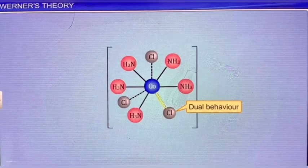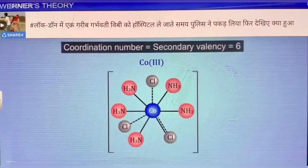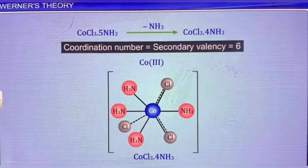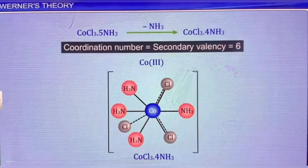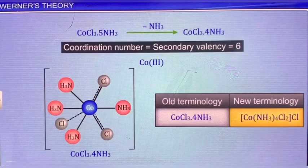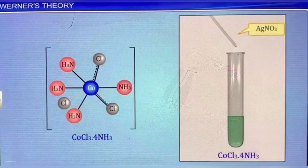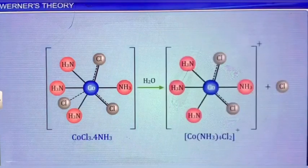Similarly, in CoCl₃·4NH₃, to satisfy the secondary valency of six, two chloride ions assume dual behavior. In modern terms, the complex can be written as [Co(NH₃)₄Cl₂]Cl. Thus, only one chloride ion can be precipitated as silver chloride. This complex, on ionization, gives two ions: one [Co(NH₃)₄Cl₂]⁺ and one chloride ion. The structure of the complex is shown here.